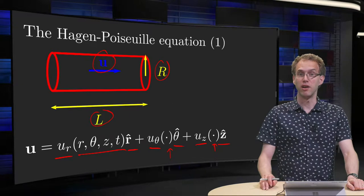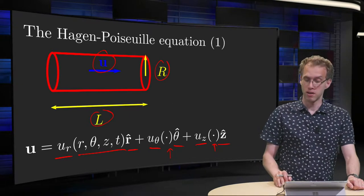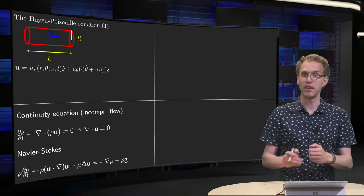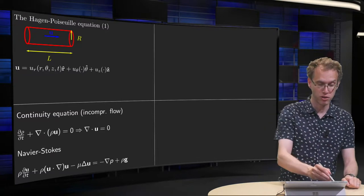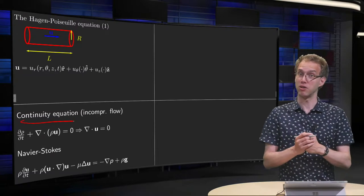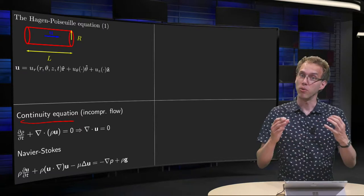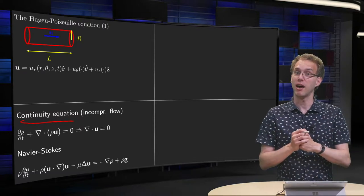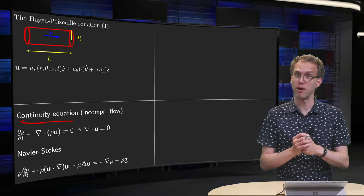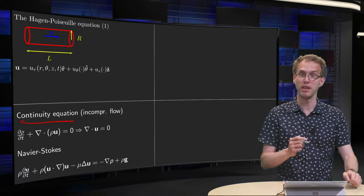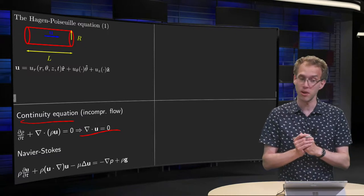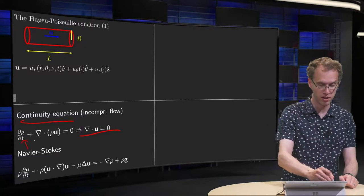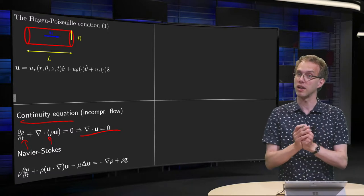Now we want to find this velocity field U. This velocity field has to satisfy two physical conditions: mass conservation, expressed by the continuity equation. We will make a first simplification and take incompressible flow, which means that our continuity equation reduces to divergence of U equals zero. Those densities are constant, so they can be taken out.